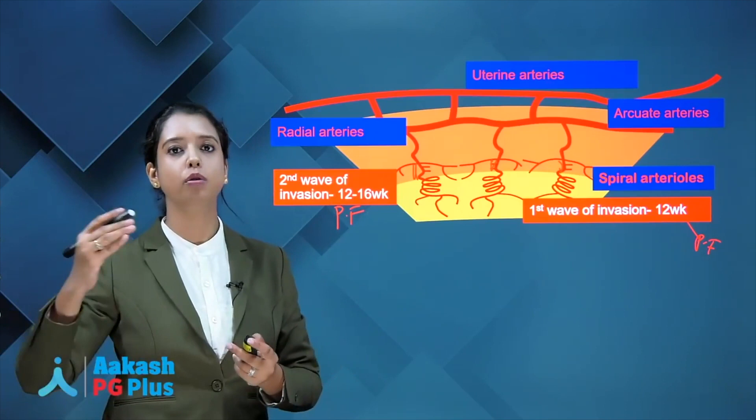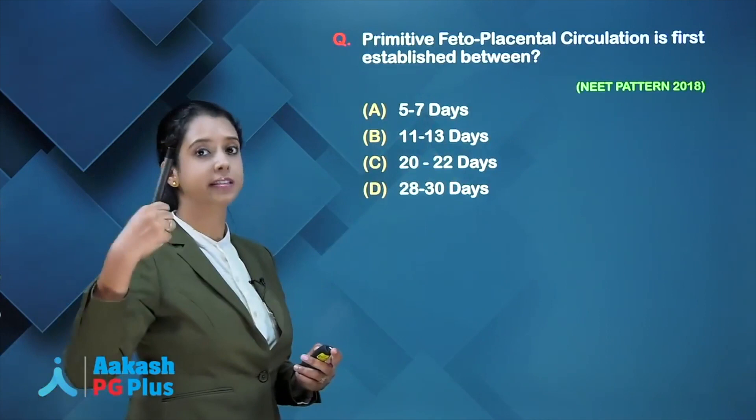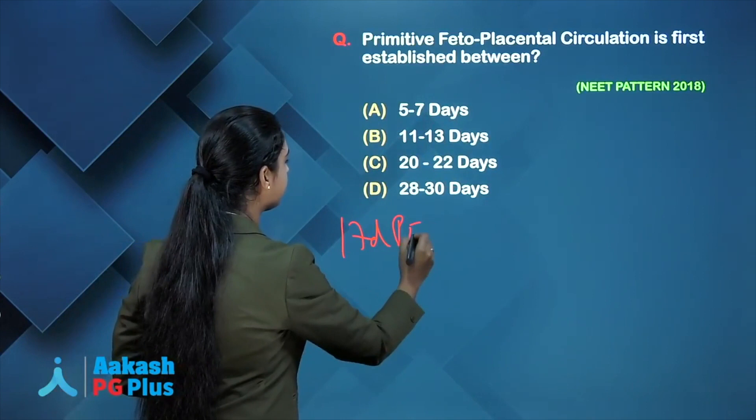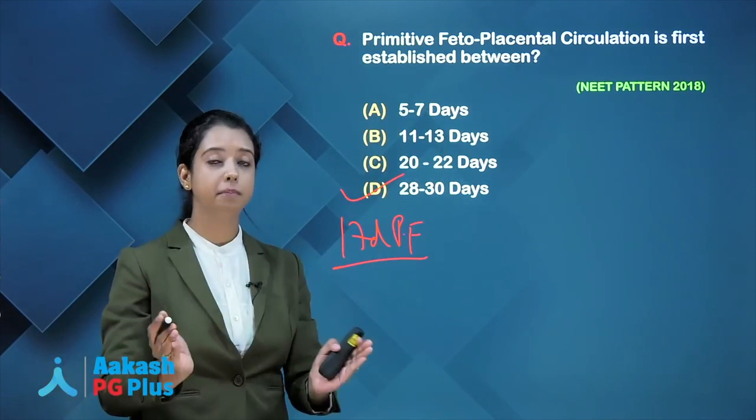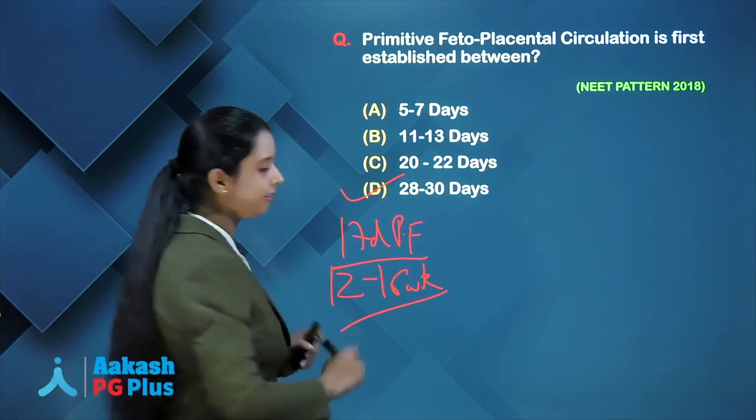The completion of fetoplacental circulation occurs at 12 to 16 weeks post fertilization, or 14 to 18 weeks of gestation. The question asks when primitive fetoplacental circulation is first established — that is at 17 days post fertilization. If they are asking in terms of weeks of gestation, it comes to 28 to 30 days post gestation. If you ask when it is completed, it is completed at 12 to 16 weeks post fertilization.